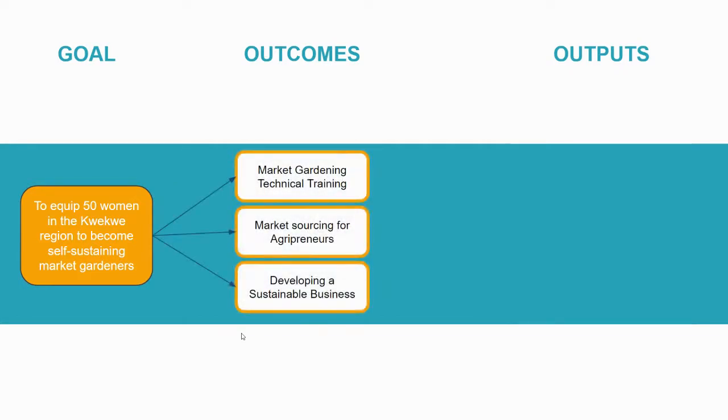Some of the outcomes that could come from this could be composed of our various training components that we've meshed up together to make sure we achieve this goal. Maybe we've had these women go through a market gardening technical training. Maybe we've also done some market sourcing for our agripreneurs. And maybe we've also trained them on how to develop a sustainable business.